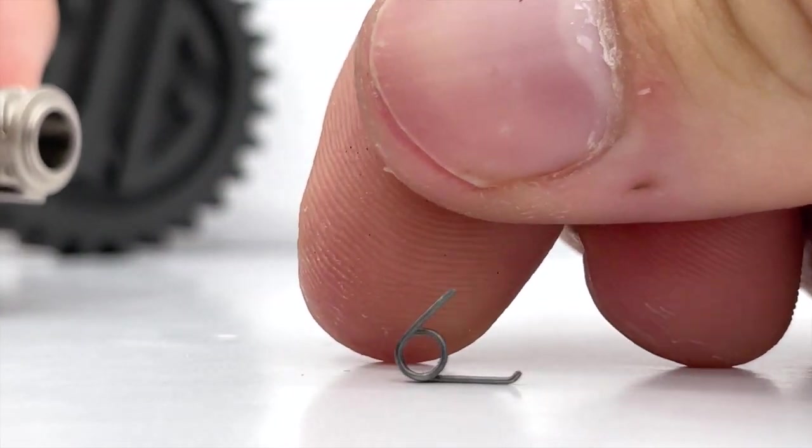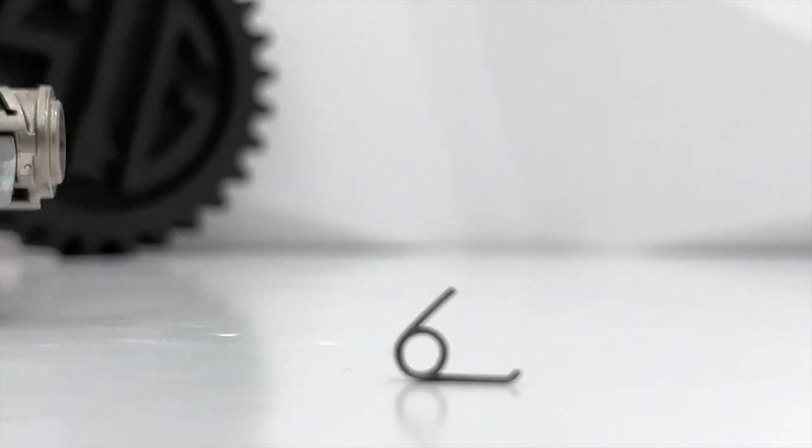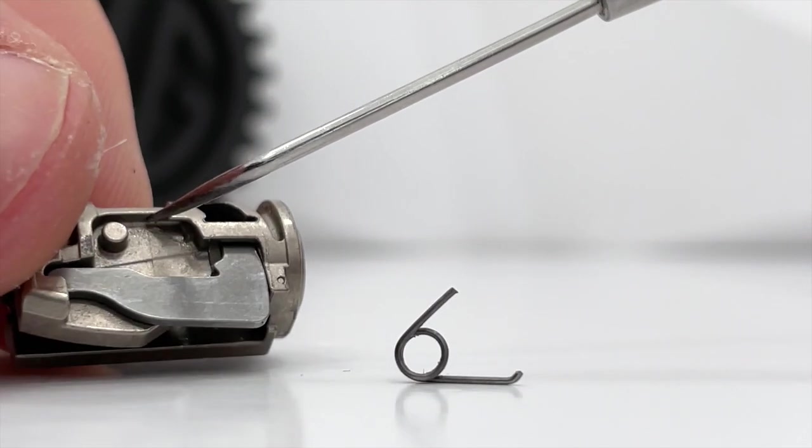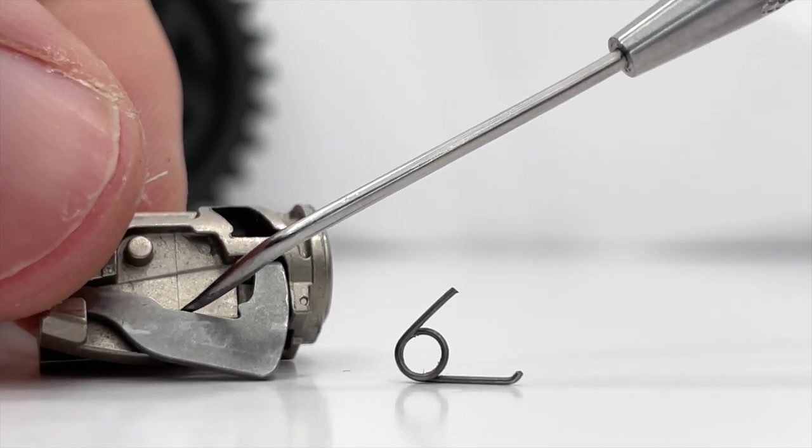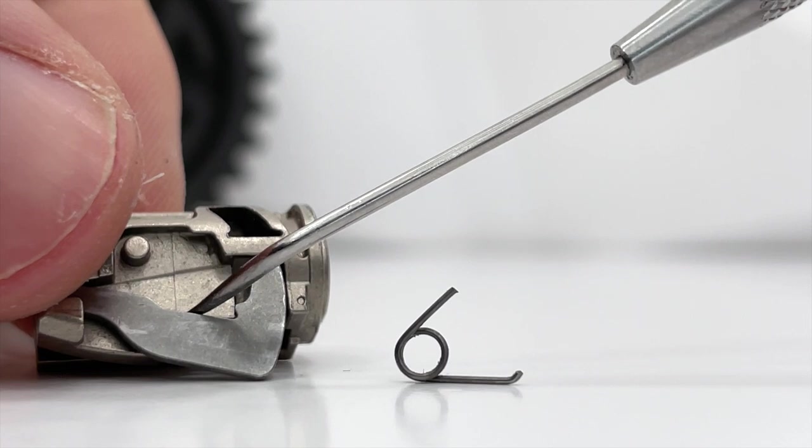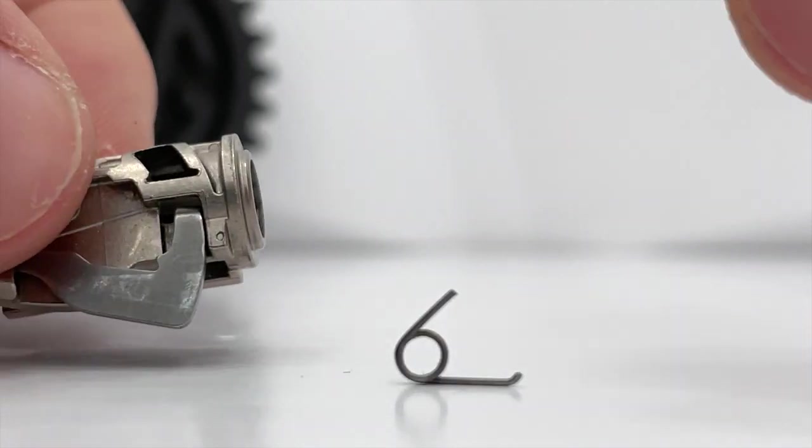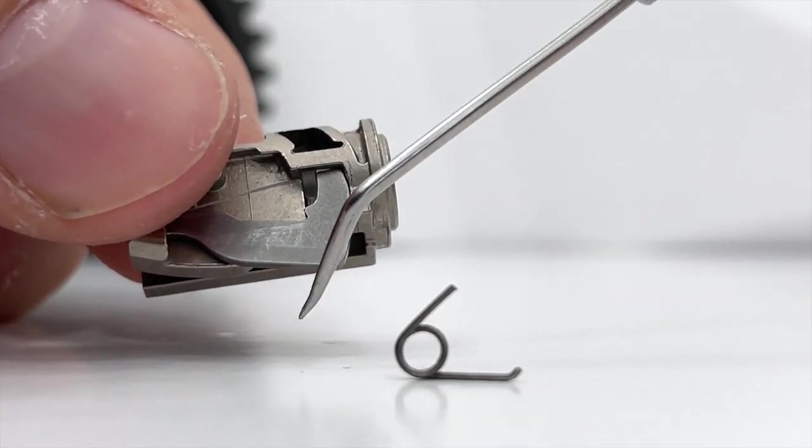The spring associated with the safety lever sits with the short leg housed within this little recess space above and the long leg angled down and makes contact with the safety lever's midpoint. The spring's job is to continuously force the safety lever down.